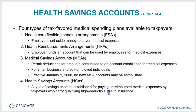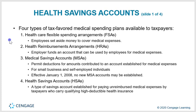Regarding HSAs — health savings accounts — there are four types of tax-favored medical spending plans available to taxpayers: healthcare flexible spending arrangements, health reimbursement arrangements, medical savings accounts, and health savings accounts.